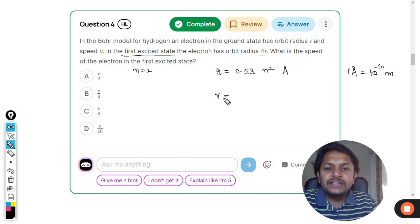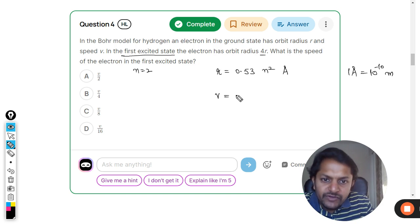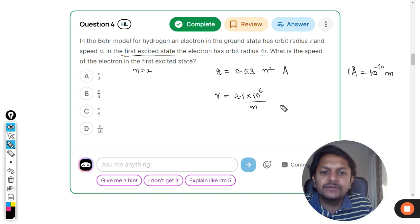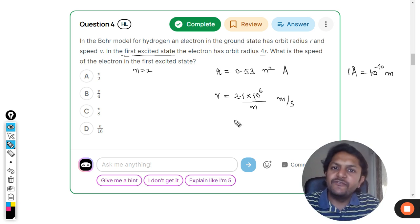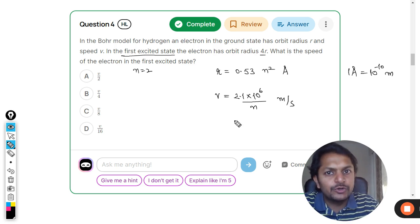The velocity is given as 2.1 into 10 raised to power 6 divided by n. Well, there is a z also there because of the atomic number, but 2.1 × 10⁶ / n meter per second.